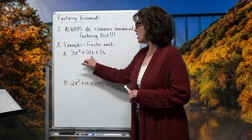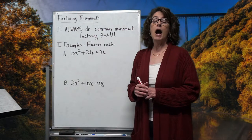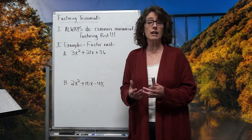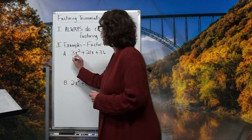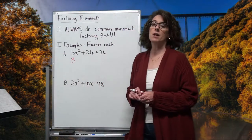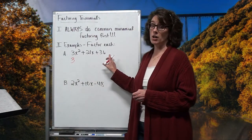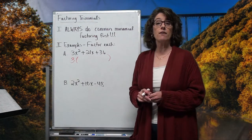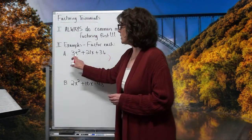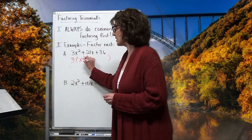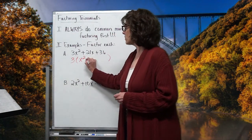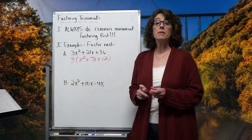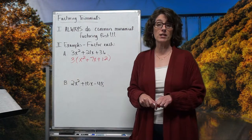Notice I've got a 3x squared, a 21x, and a 36. I'm going to look at each of those coefficients — 3, 21, and 36 — and ask: is there a number I can divide out of all those? Yes, I can divide a 3 out of every one of those terms. I can divide x's out of the first two terms but not the last, so I won't divide any x's out. When I divide by 3, I'm left with x squared, then 7x, then 12. Now I am ready to head for that double parenthesis.